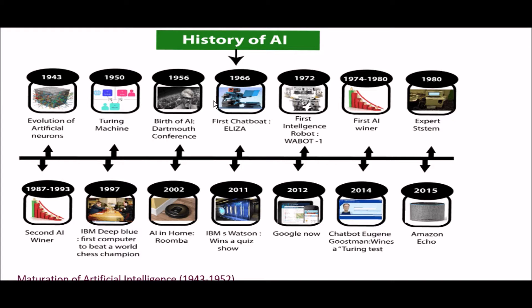The journey of artificial intelligence has begun in 1943 with the evolution of artificial neurons. Moving to 1950, the Turing machine was invented. Then the birth of AI at the Dartmouth conference in 1956. Next in 1966, the first chatbot, ELIZA, was invented. And the first intelligent robot, named WABOT-1, was invented in 1972.